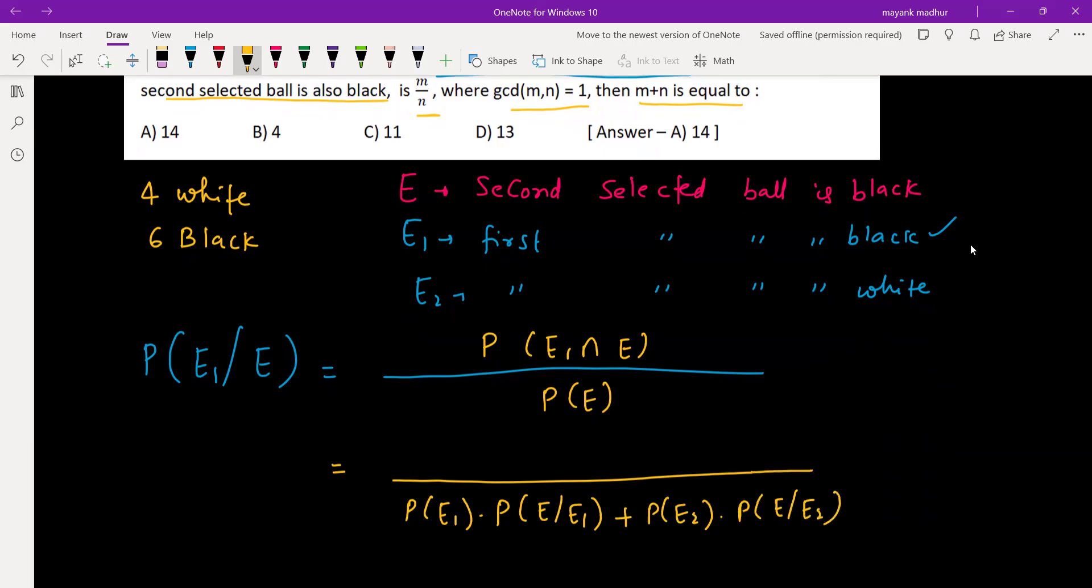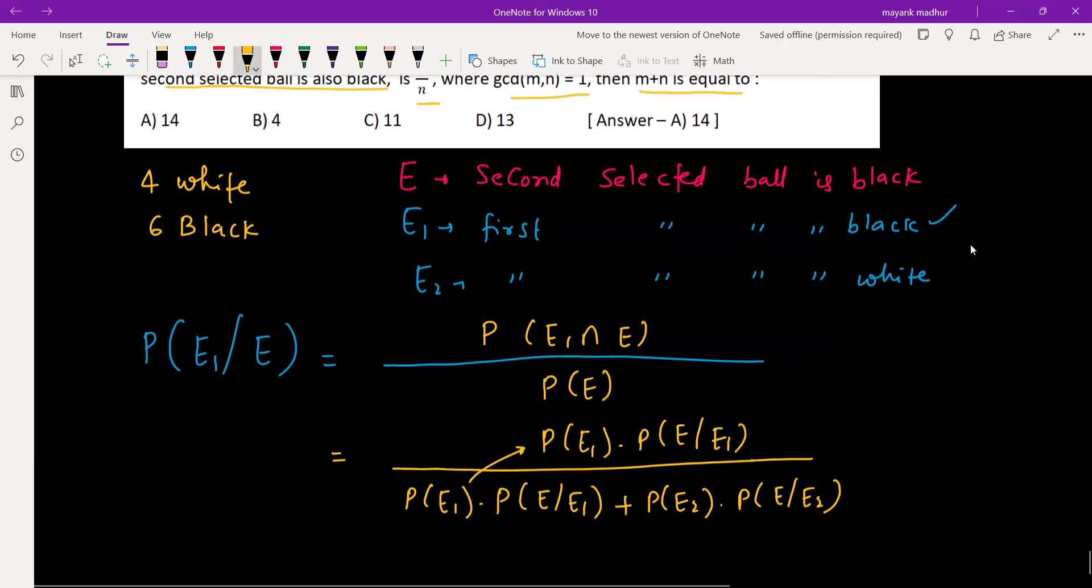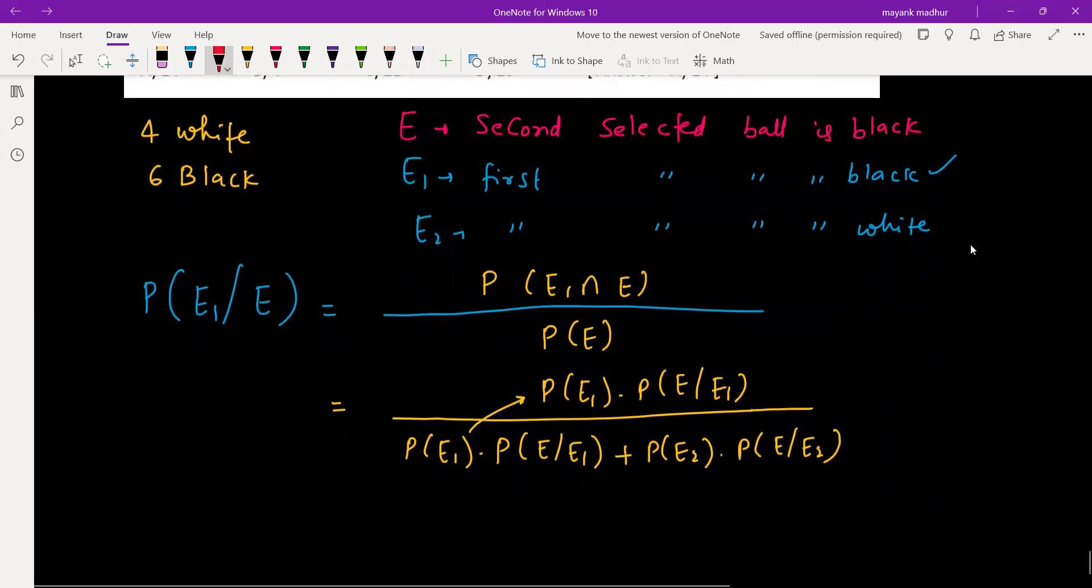And numerator is favorable case, E1 case, P(E1), P(E|E1). So what is P(E1)? E1 is that first ball is black, so first ball black probability is six by total which is ten.